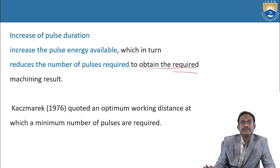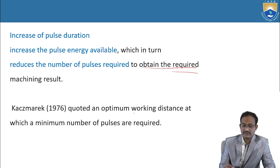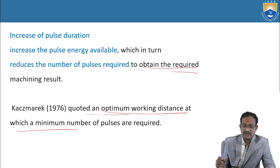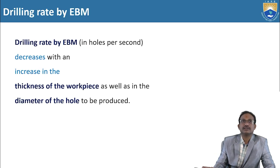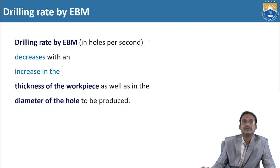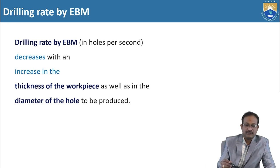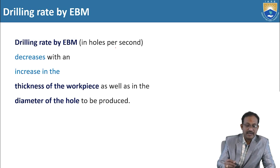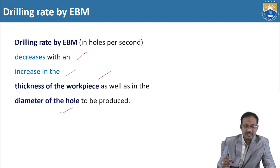Kajmarek during 1976 experimented and found an optimum working distance at which a minimum number of pulses are required. The drilling rate by EBM — measured in holes per second — decreases with an increase in the thickness of the workpiece as well as in the diameter of the hole to be produced.